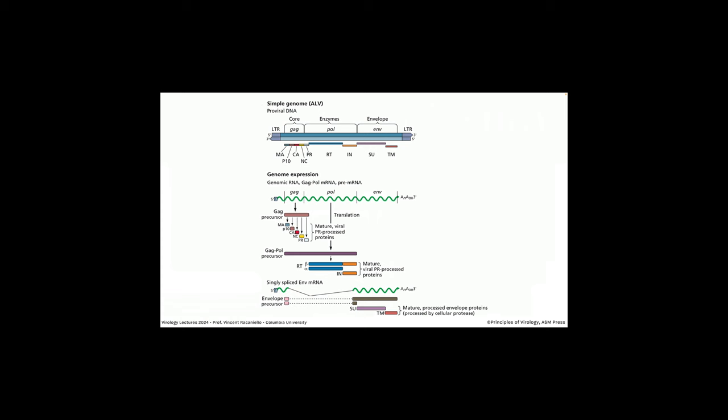A term you need to remember is provirus or proviral DNA — that means the integrated DNA copy of the retrovirus genome. You go from RNA to DNA, and that double-stranded DNA, when integrated into the cell, is called the provirus, after Howard Temin's hypothesis. The provirus is flanked by two sequences called LTRs — long terminal repeats. All of you have thousands of LTRs in your genome, as does every animal on the planet.